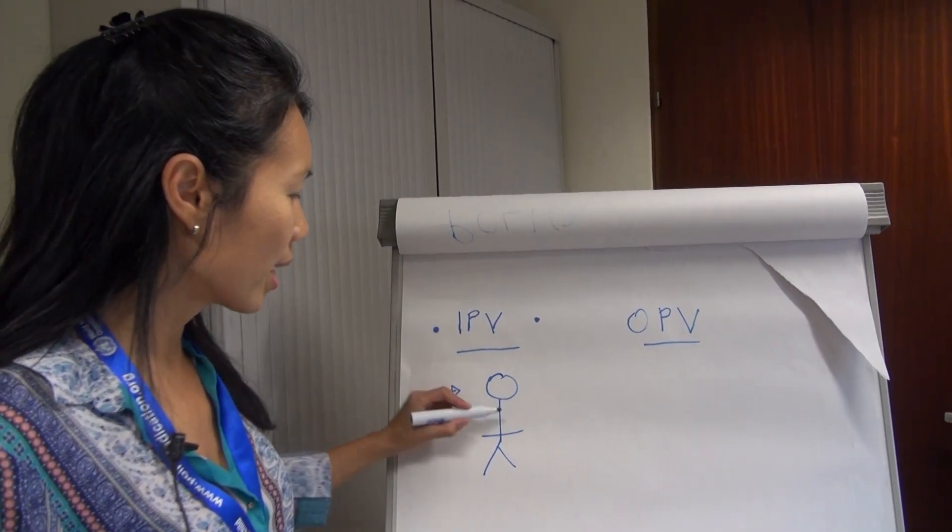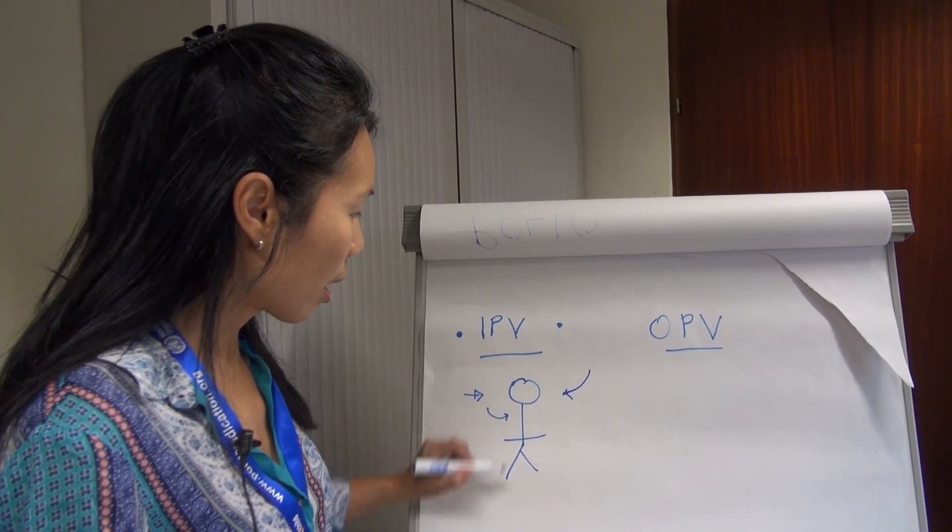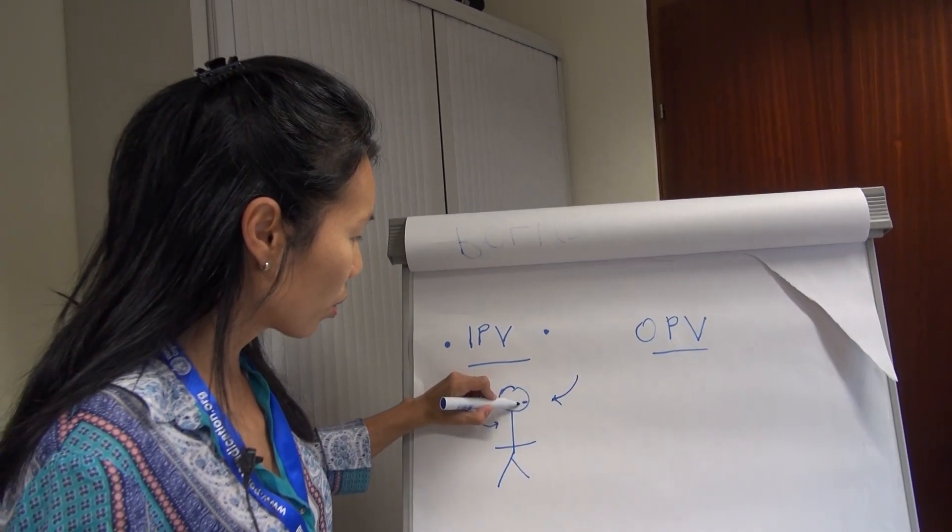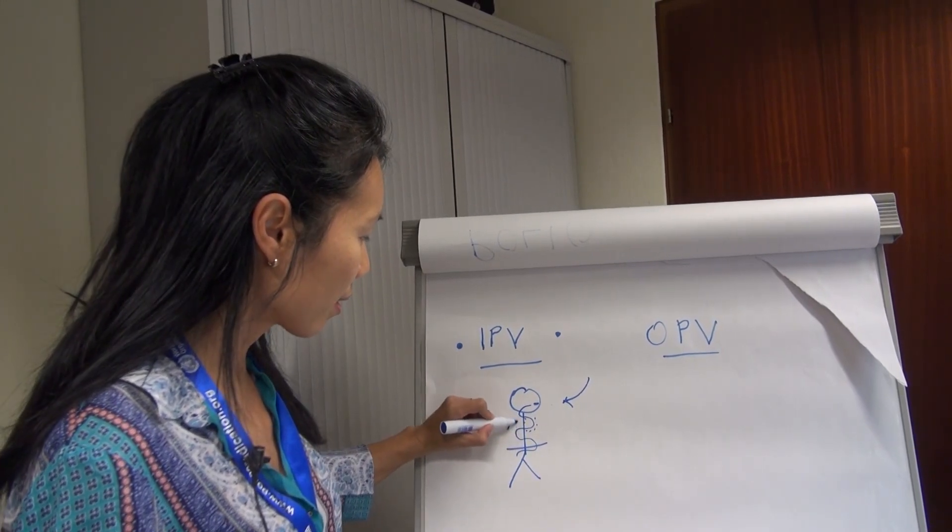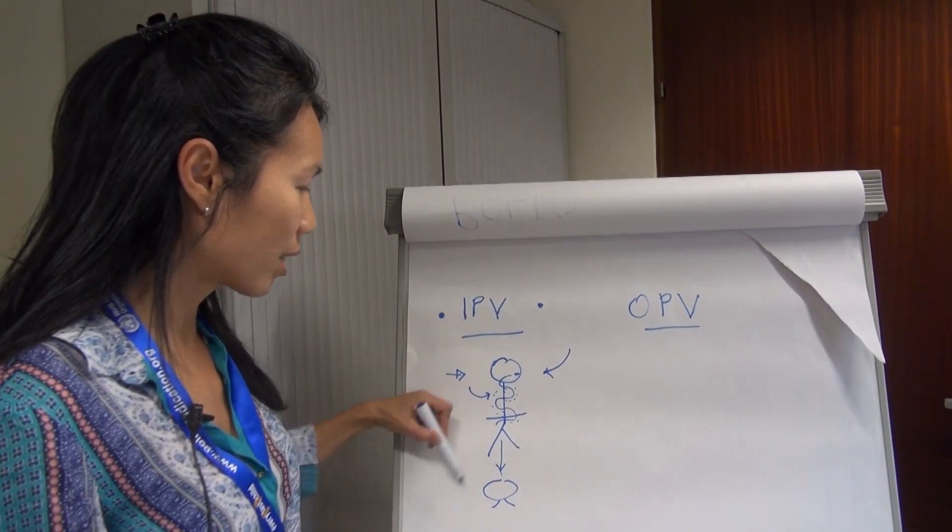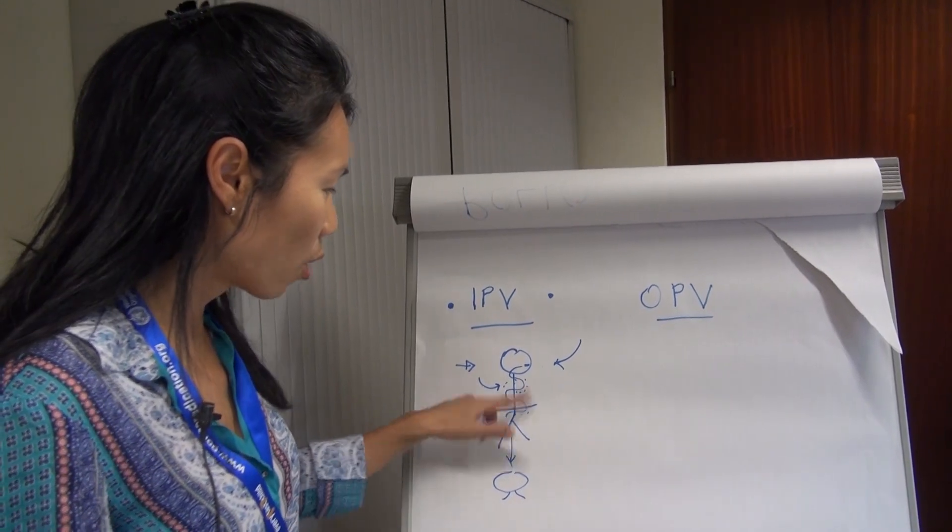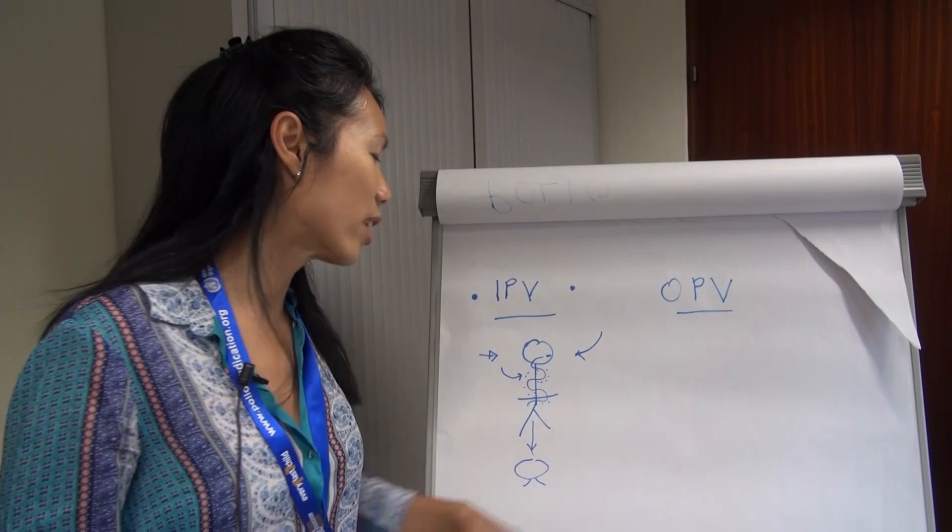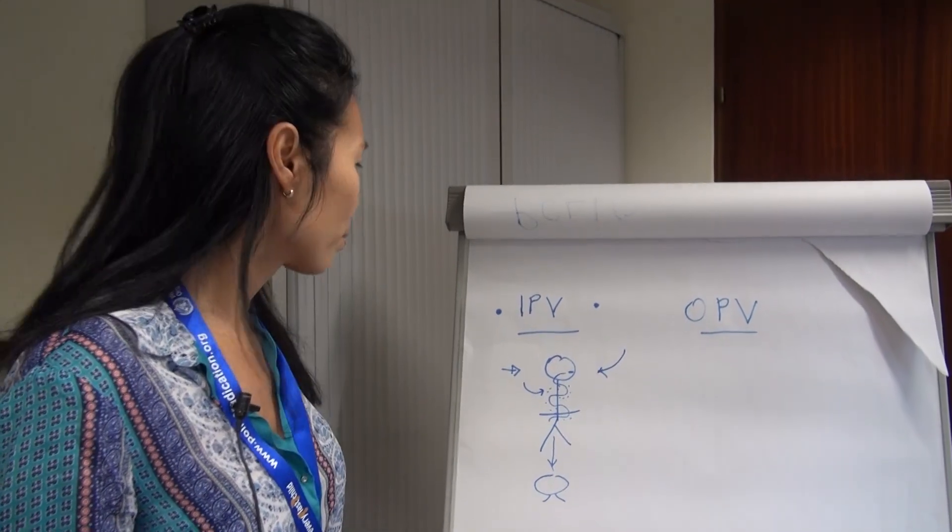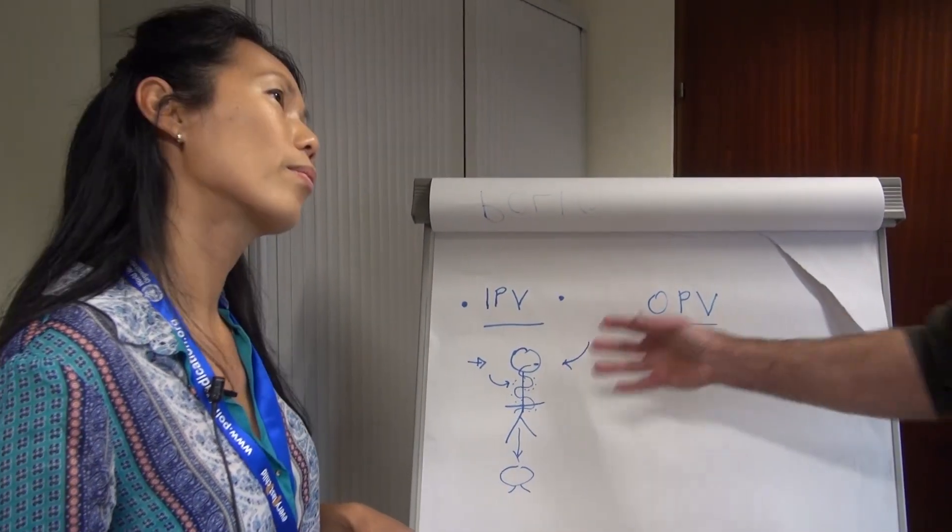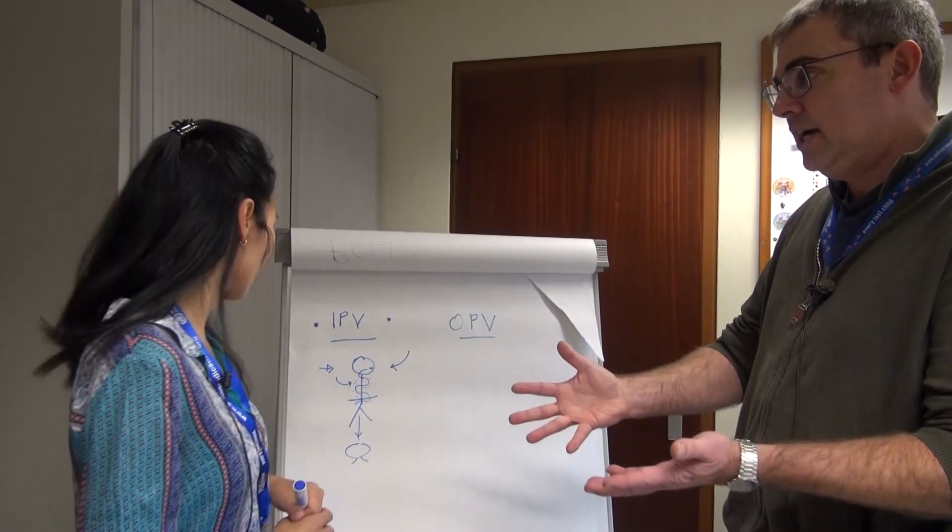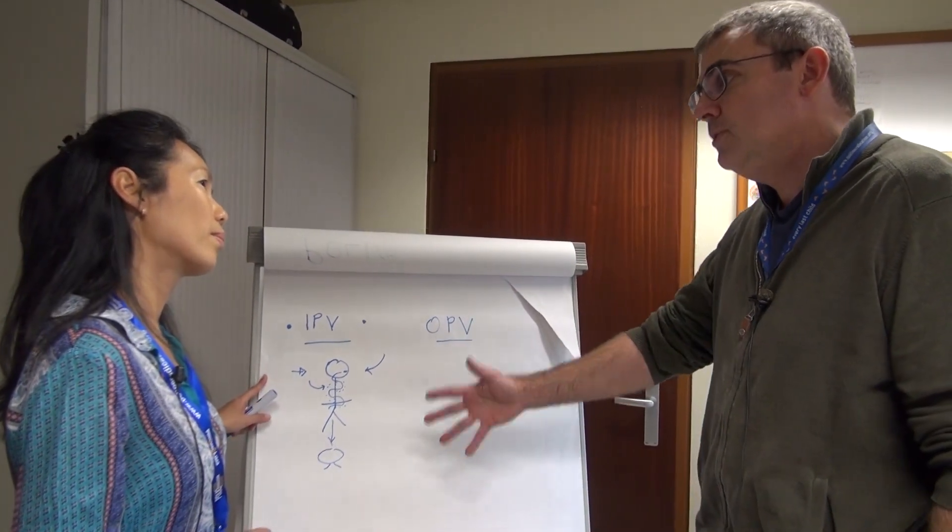However, what the IPV does not do is that if the child is in contact with the virus, the virus can still go through the gut and multiply and still be spread through the feces. So the virus still is able to move through the gut and not cause paralysis but it's still shed out and can still potentially infect other children or spread in the environment. So in other words, if a child is given IPV and they are then infected with wild polio virus, they will not get the paralysis which is great. No disease in that child but they can still spread the wild polio virus to other children. Absolutely.